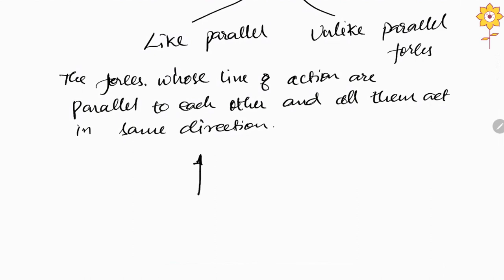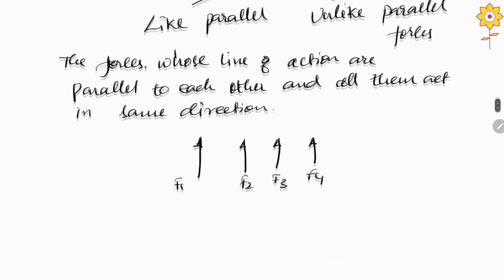You have three or four forces, F1, F2, F3. If you see the direction, it is towards upward. In this, all the forces are acting in the same direction and the line of action are also parallel. So this is called as a like parallel force system.